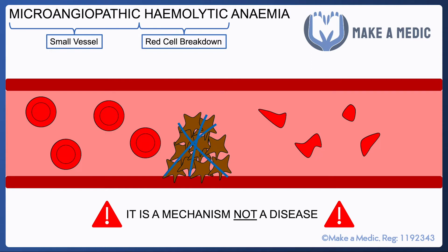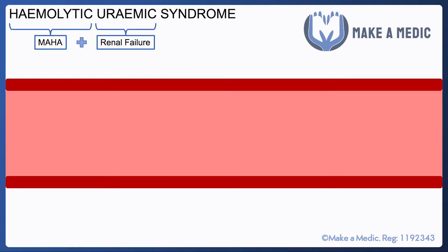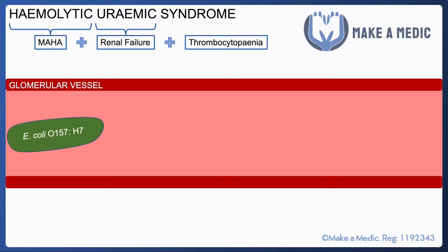Now let's move on to haemolytic uraemic syndrome. Looking at the name: haemolytic means MAHA specifically, uraemic suggests that there's renal failure, and what makes it a syndrome is that it also causes thrombocytopenia. The blood vessels we're talking about in haemolytic uraemic syndrome are the small vessels within the kidneys — the glomerular vessels.